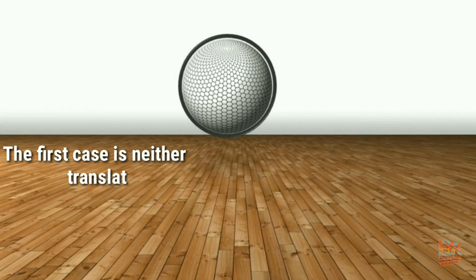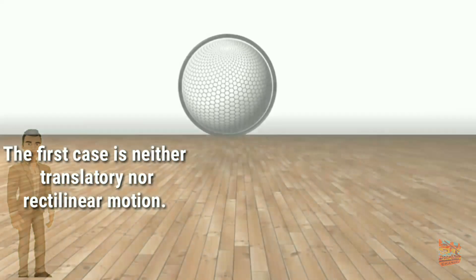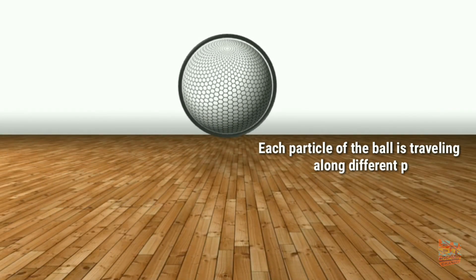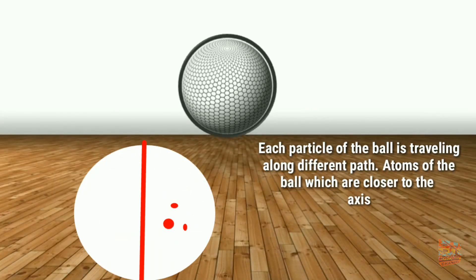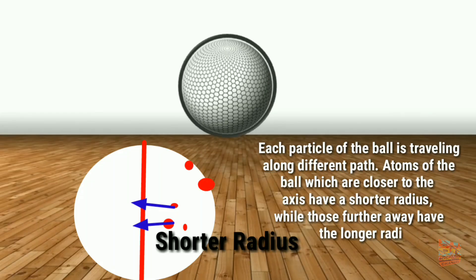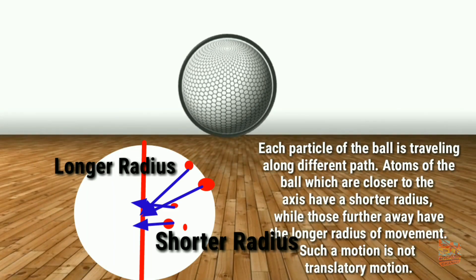The first case is neither translational nor rectilinear motion. Why? Because each particle of the ball is traveling along a different path. Atoms of the ball which are closer to the axis have a shorter radius, while those further away have the longer radius of movement. Such a motion is not translational motion.